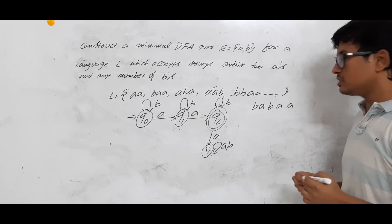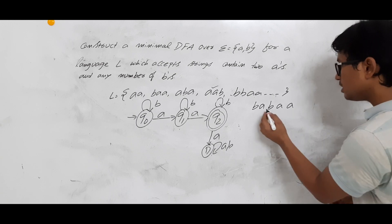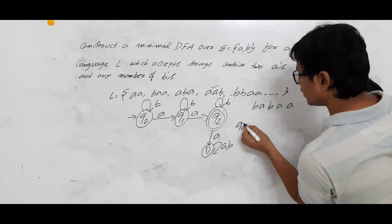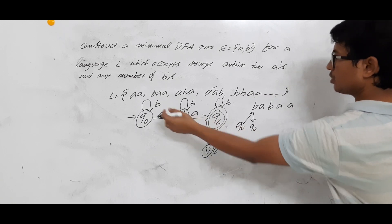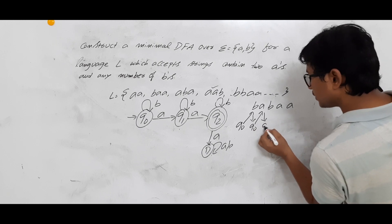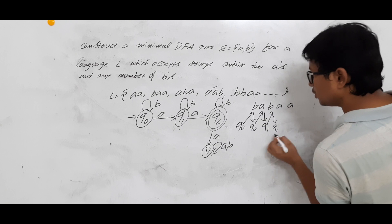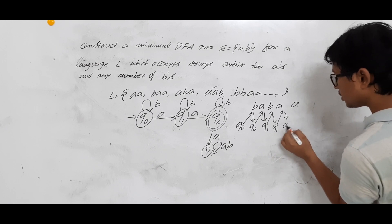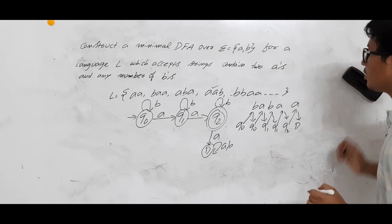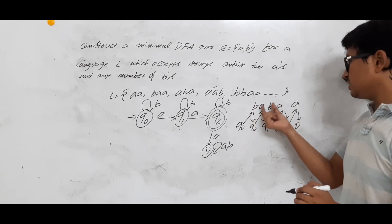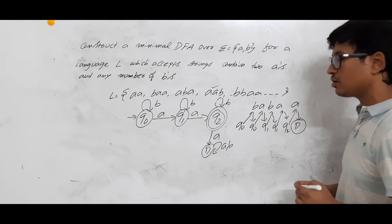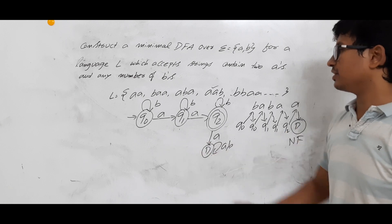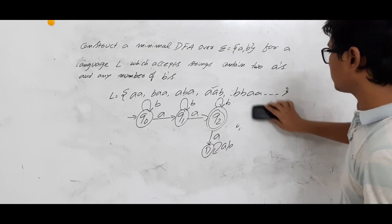Let me take another counter-example: BABAA. Does BABAA belong to language L? No, it does not — it has three A's. So the DFA should not accept it. Q0 on B goes to Q0; Q0 on A goes to Q1; Q1 on B stays at Q1; Q1 on A goes to Q2; Q2 on A goes to D. From the initial state by traversing BABAA we reach D, which is a non-final state — the string is not accepted.